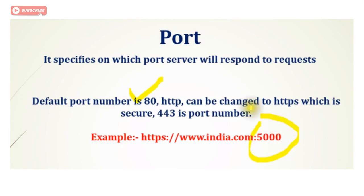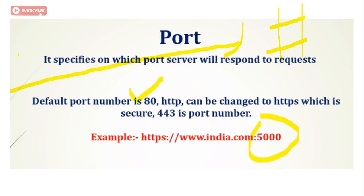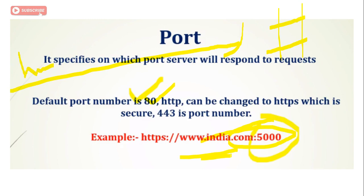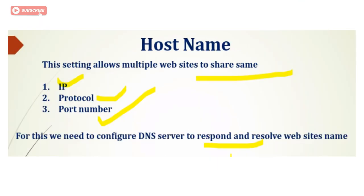Next is port, which specifies on which port the server will respond to requests. For example, if a client sends an HTTP request to facebook.com, the server checks which port the request is coming on. The default port for HTTP is 80. It can also be configured for HTTPS, which uses port 443. For example, HTTPS://www.india.com:5000 — like this we can configure it very easily.